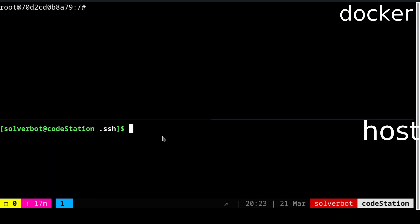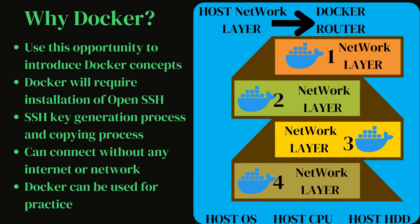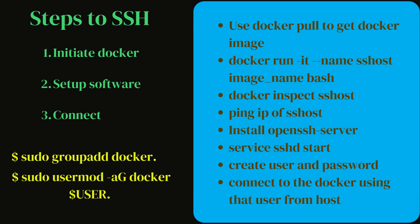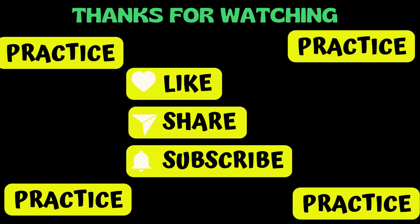To summarize, we created a new container — Docker named it elegant_surf automatically. If you want to name it yourself, use the --name flag in docker run, for example: --name sshhost. We saw how to ping the IP address, install OpenSSH server, start the service, create a user and password inside the Linux Docker environment, and connect to Docker using that user and host. That is the overarching process shown.